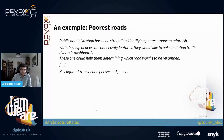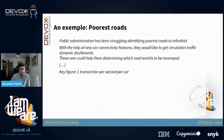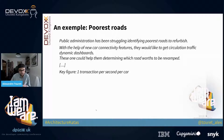Here is an example of a use case you could get during a kata — about 'poorest roads,' a real-world subject I discovered at an IT conference a few years ago. A public administration has been struggling to identify the poorest roads to refurbish. They would like to identify which roads are worth prioritizing and use new car connectivity features to provide traffic circulation dashboards. The key figure is one transaction per second per car. By reading this kata, you can take any assumption, ask any question, and then design your system.